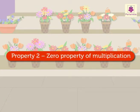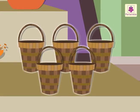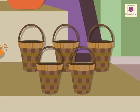Property two: Zero property of multiplication. Look. There are five flower baskets. There are zero flowers in each basket.